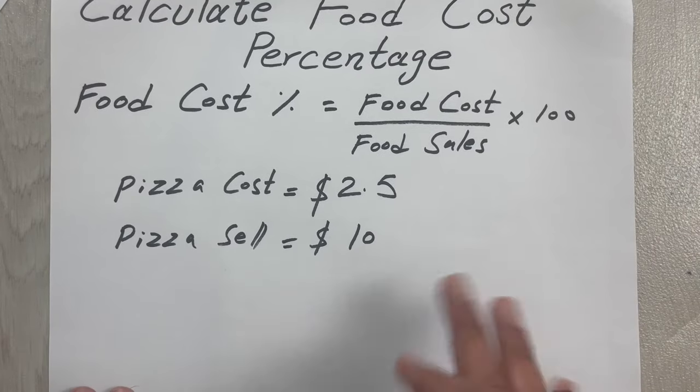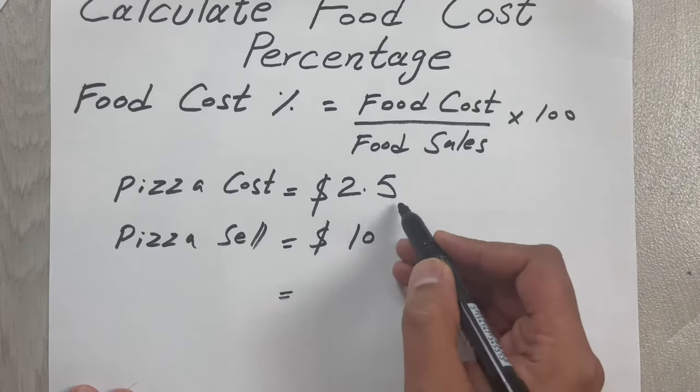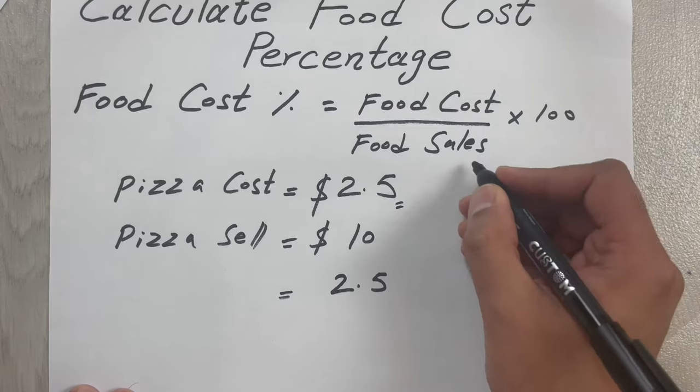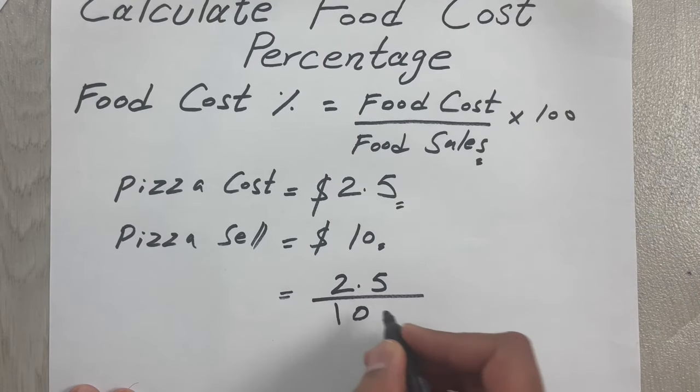The food cost is $2.50 and the food sale is $10, so 2.5 divided by 10, multiplied by 100.